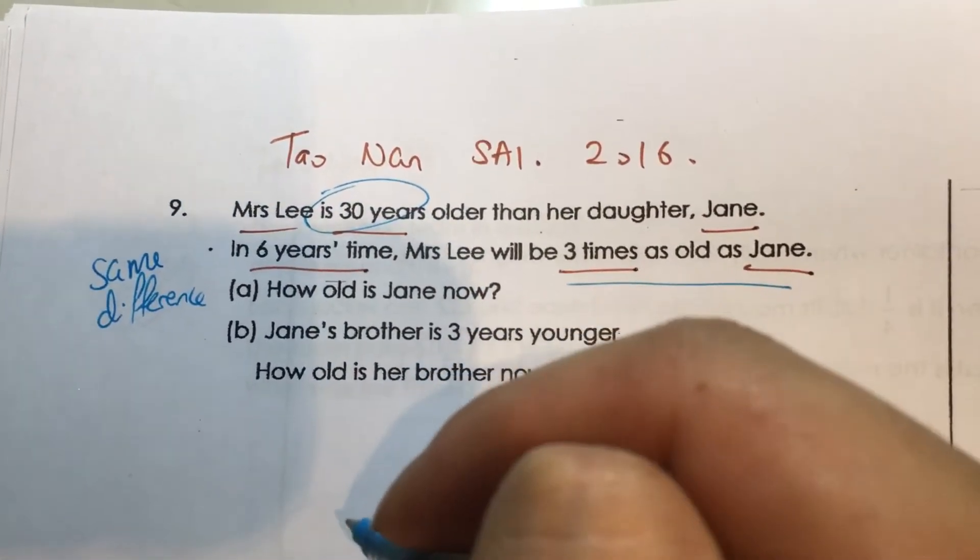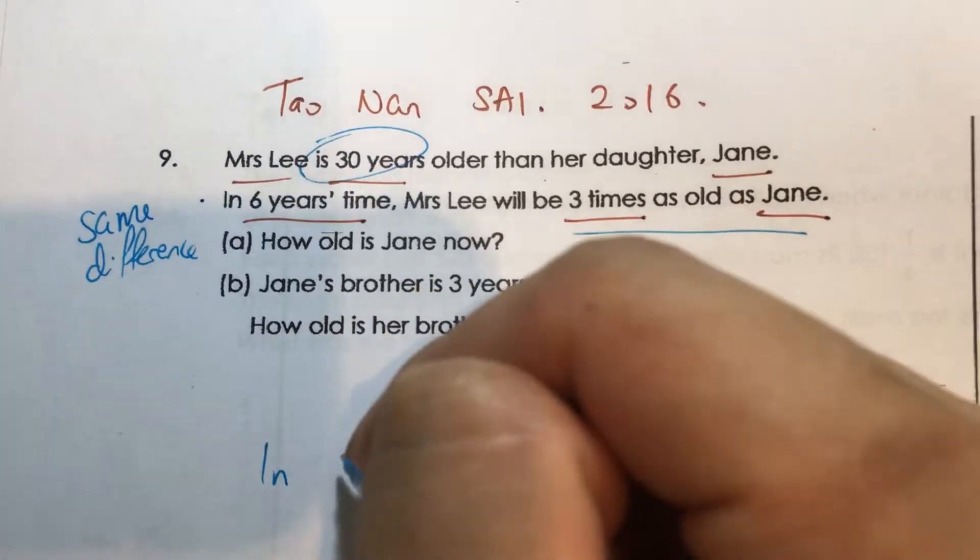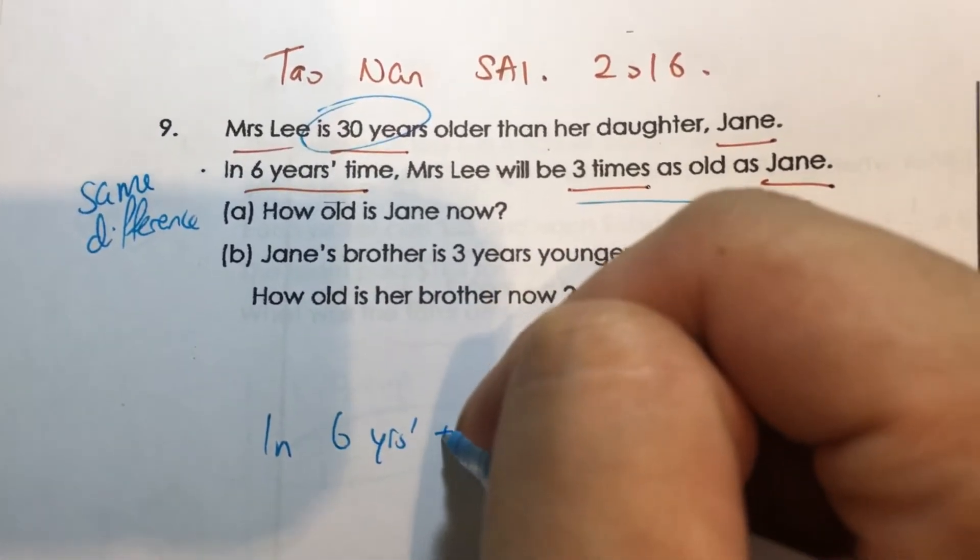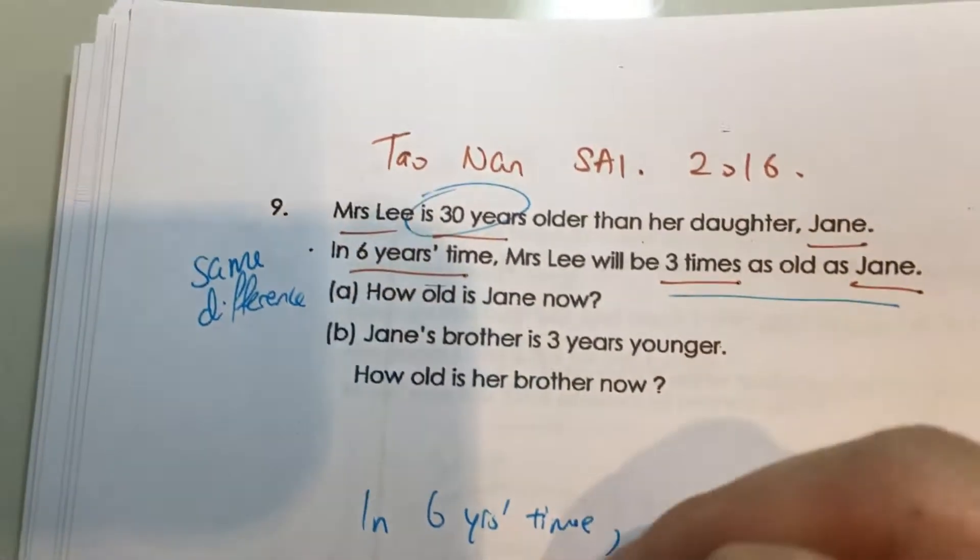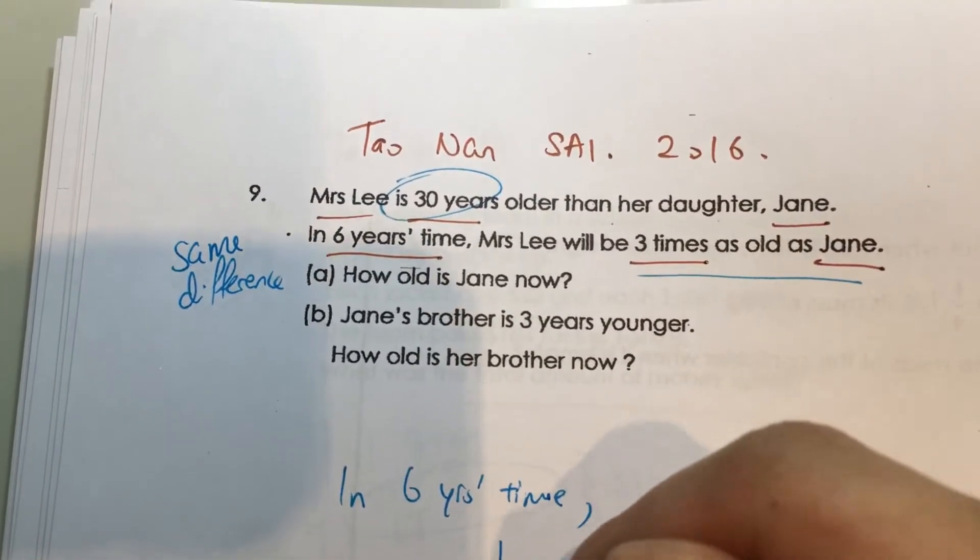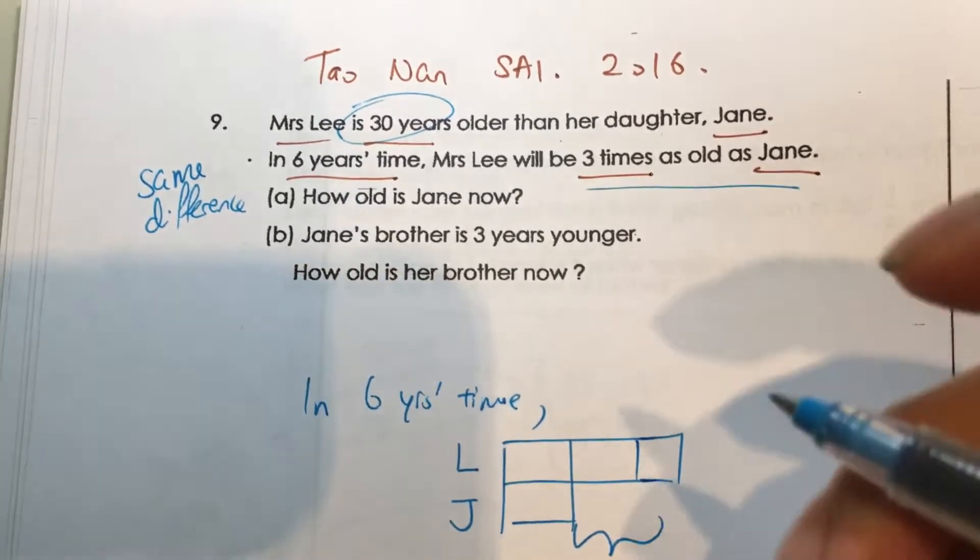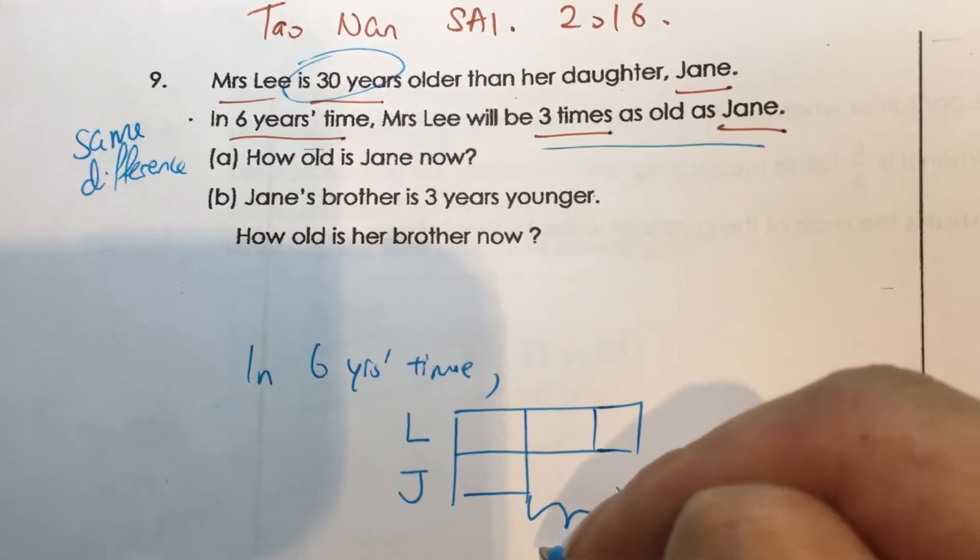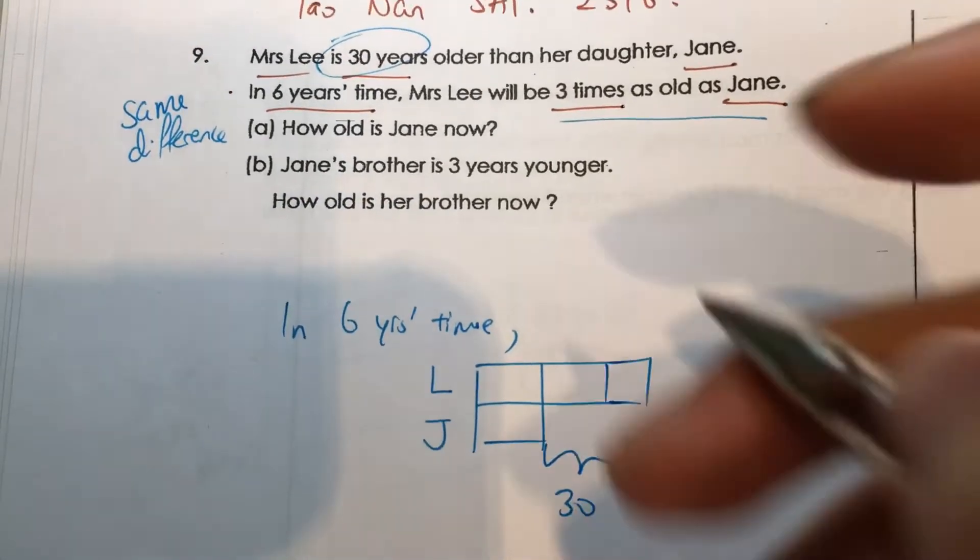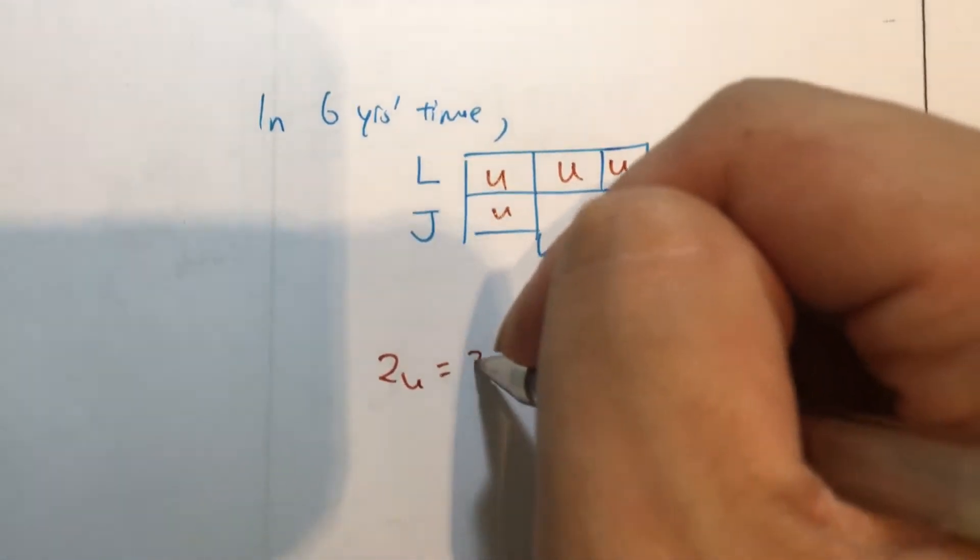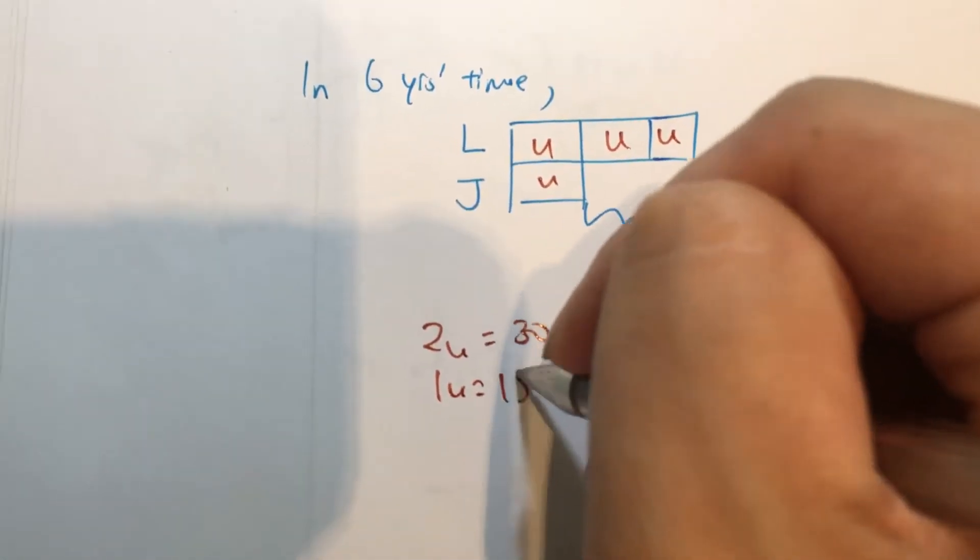So in 6 years time, Mrs. Lee and Jane - I'll have 3 is to 1. And you know that because it's same difference concept, so it's 30 as always. Let's call them units, and then 2u equals to 30, and 1u equals to 15.